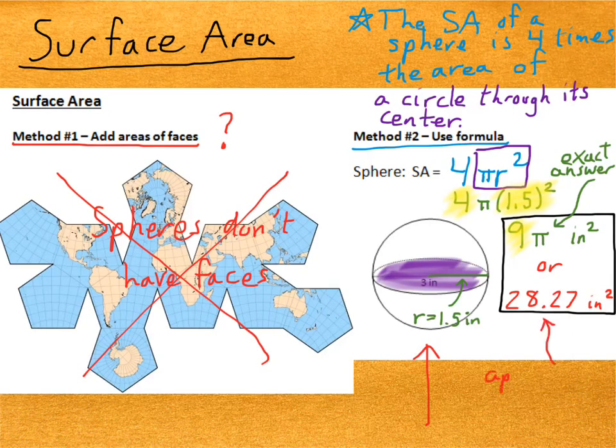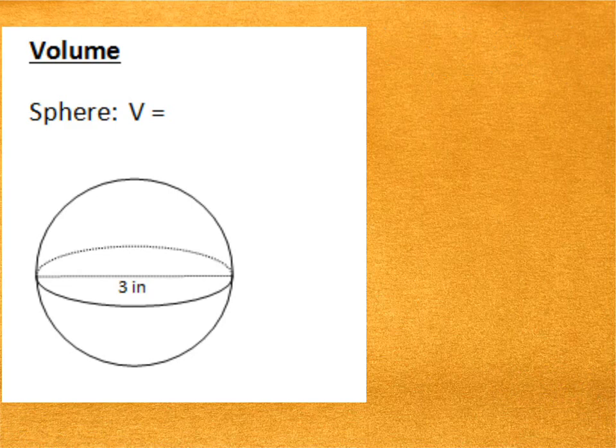Now, the 28.27 is called an approximate answer, because we had to round the decimal after we multiplied. So, it's not giving us 100% an accurate answer, because we had to round. Now let's talk about volume.